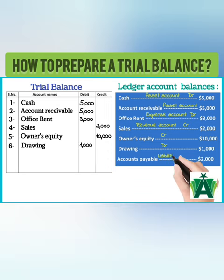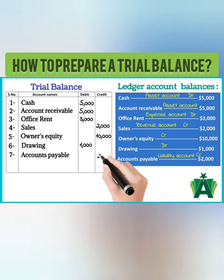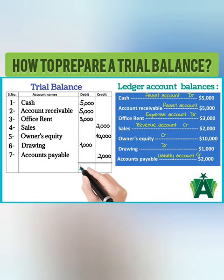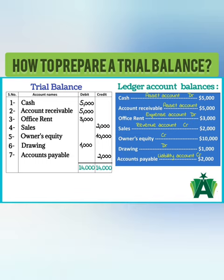Accounts payable is a liability account; it is recorded in the credit column of a trial balance. The total amount of the debit column must be equal to the credit column.